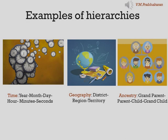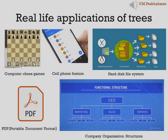The implementation can be done using a node object which has two fields: the first field is the parent, called type node, and the second field is the children, called a collection of nodes. In addition to these two fields, you could usually have some domain-specific behavior. Now, real-time applications of trees: one reason to use trees is because you want to store information that naturally forms a hierarchy. Real-time examples include computer chess games, cell phone features, hard disk file systems, PDF (portable document format), and company organization structures. In computer chess games, a huge tree is built and pruned at runtime using heuristics to reach an optimal move.